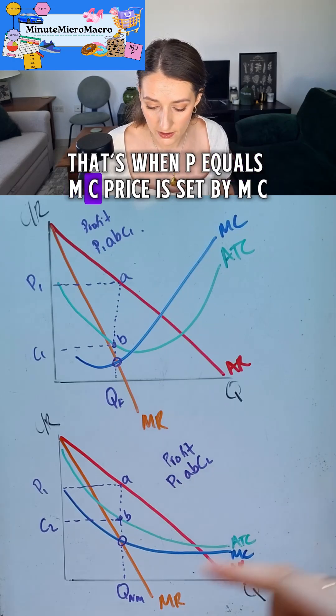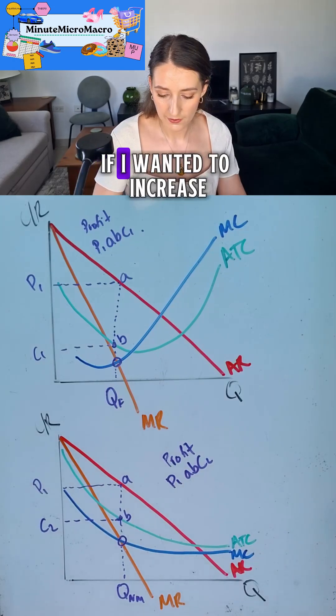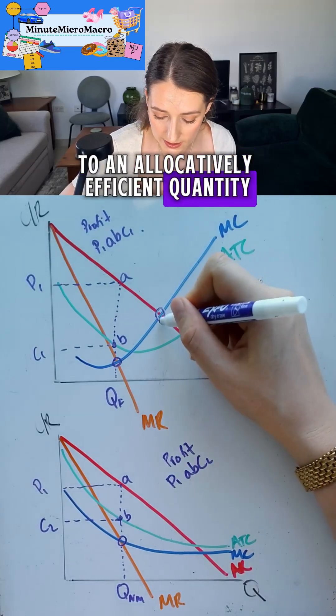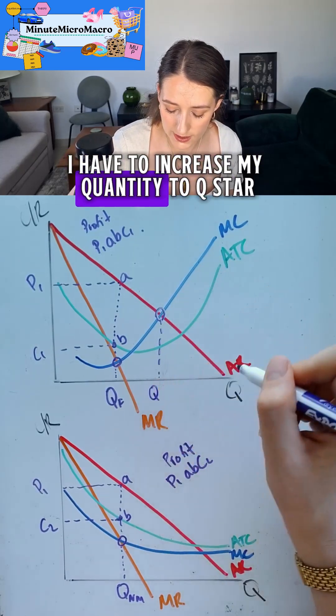Neither of these firms are being allocatively efficient. That's when P equals MC. The price is set by MC. If I wanted to increase to an allocatively efficient quantity, I have to increase my quantity to Q star.